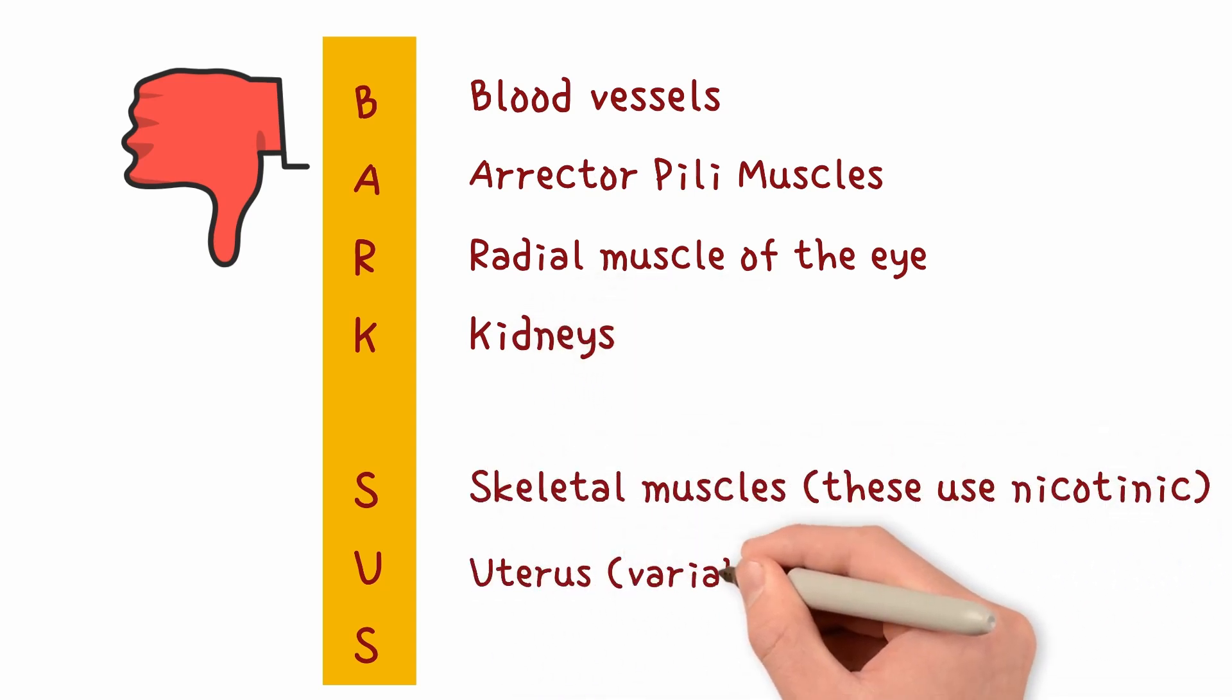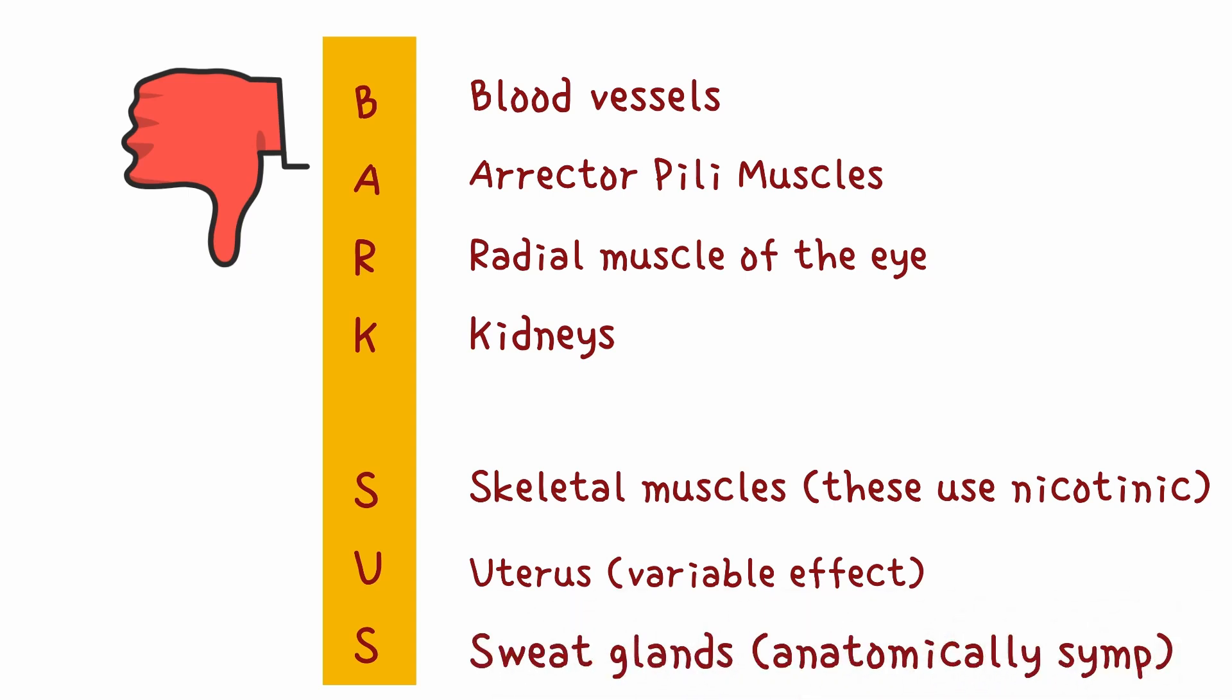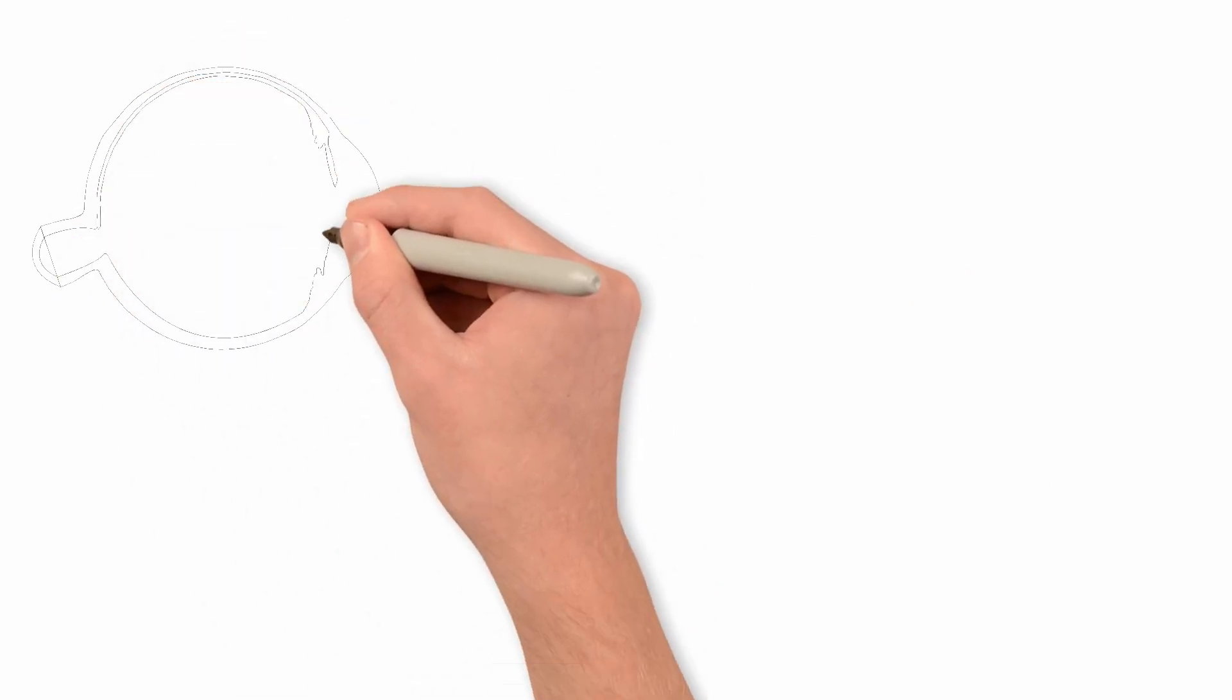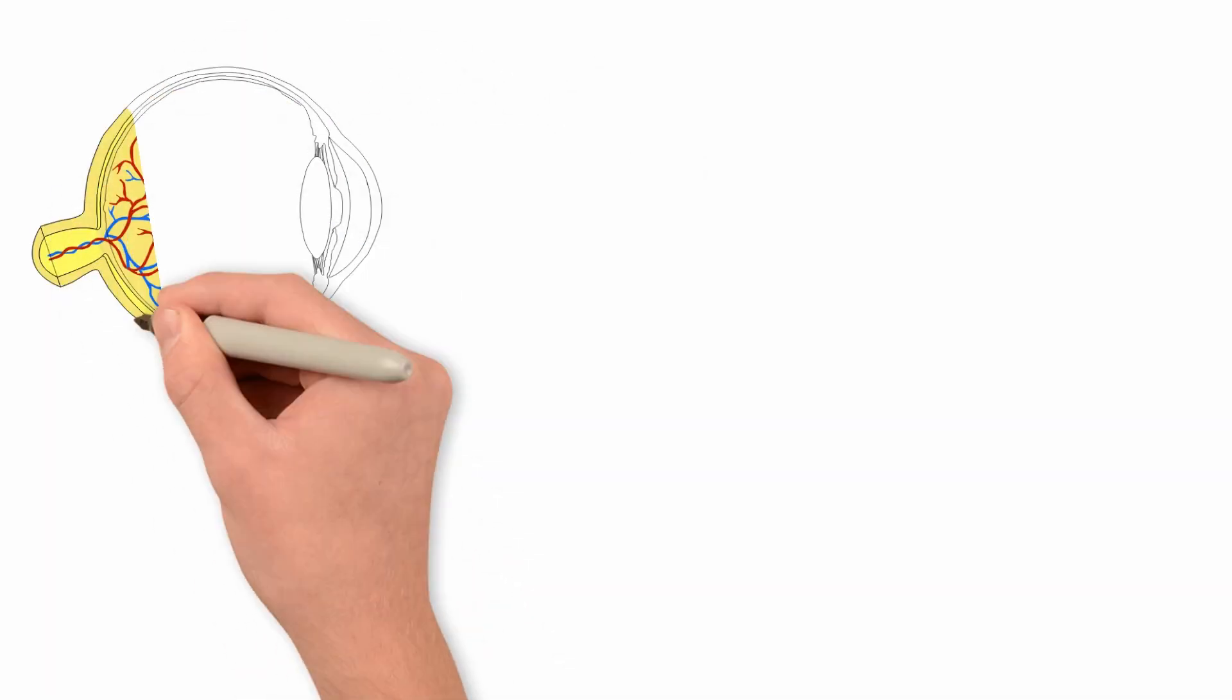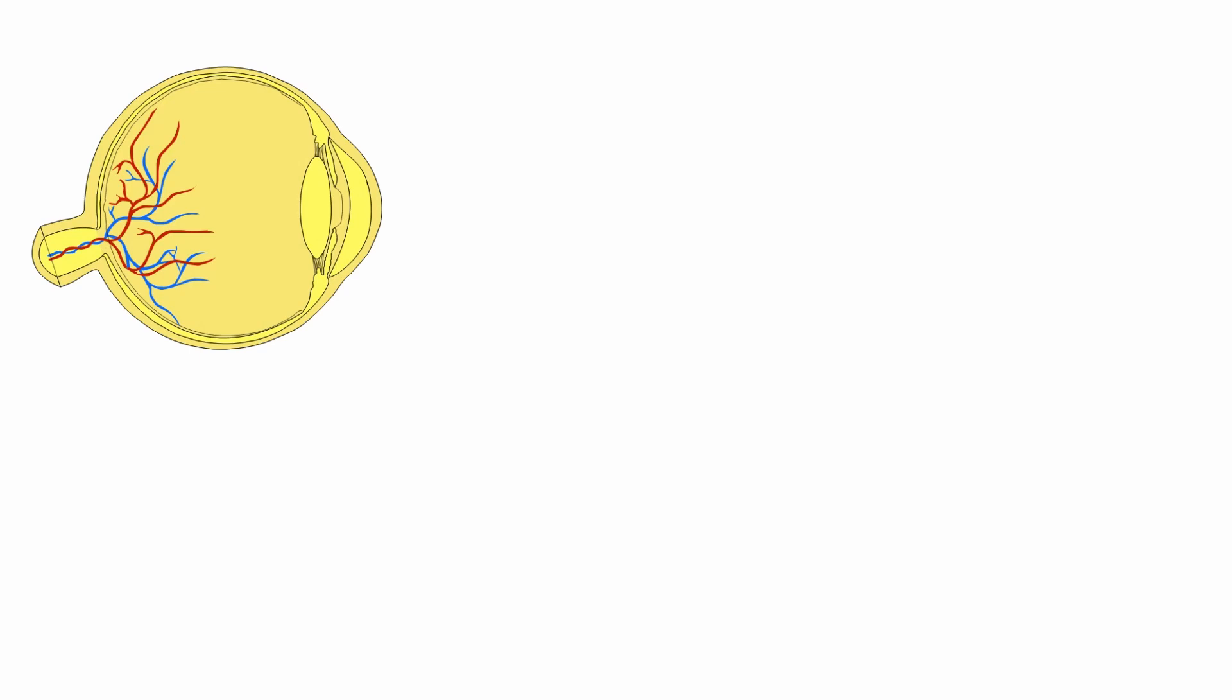U, uterus, variable effect. S, sweat glands, have sympathetic innervation. Now that we know the exceptions, let's look at the physiology. The aim of parasympathetic nervous system is to conserve energy and maintain normal, day-to-day bodily functions.